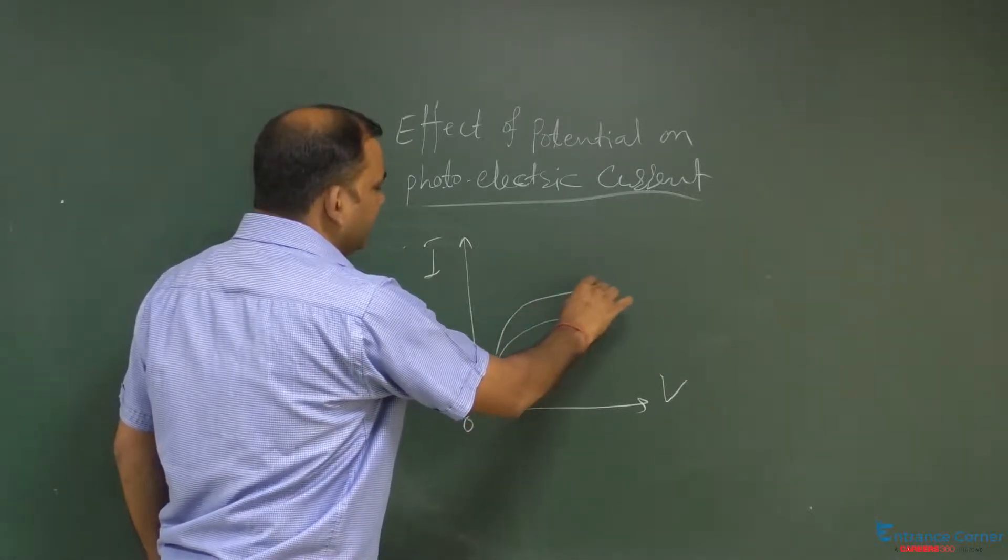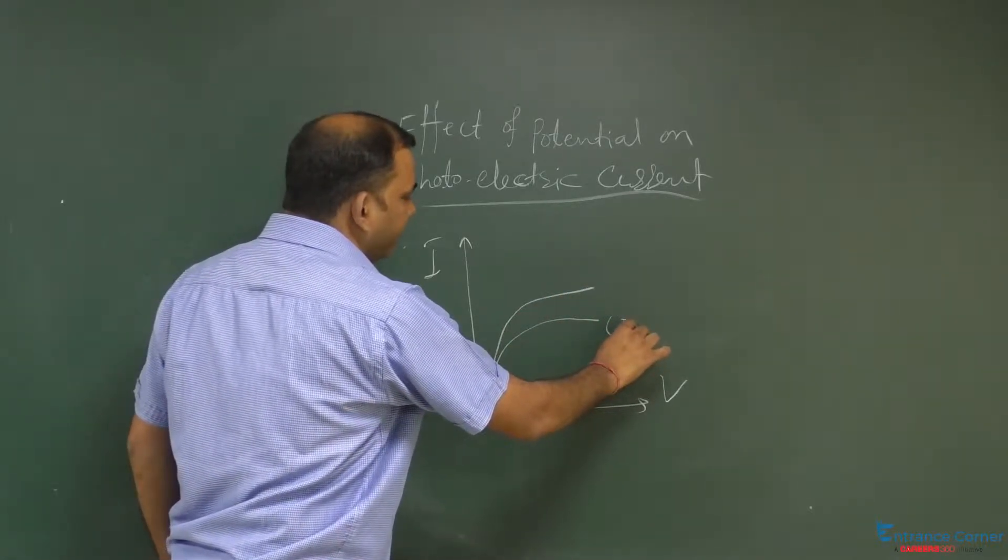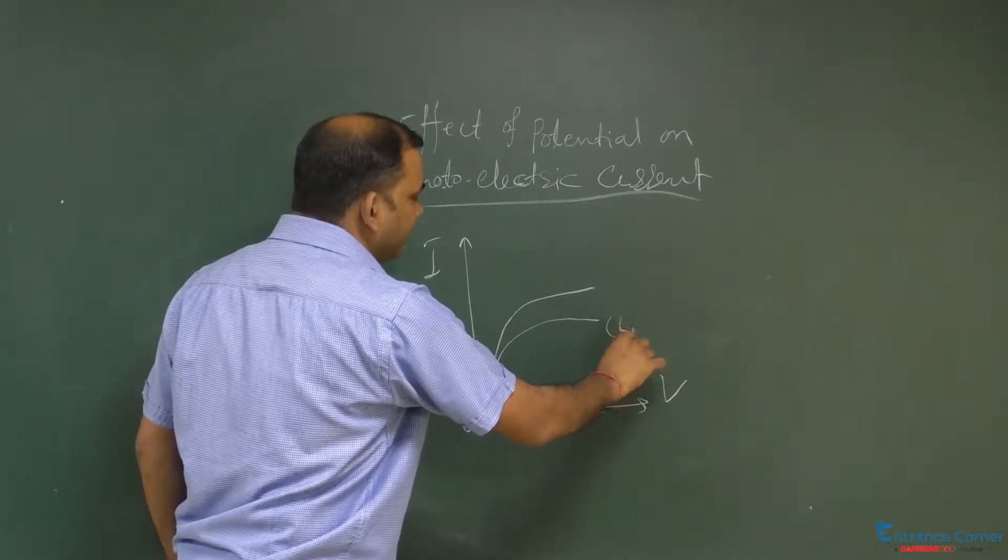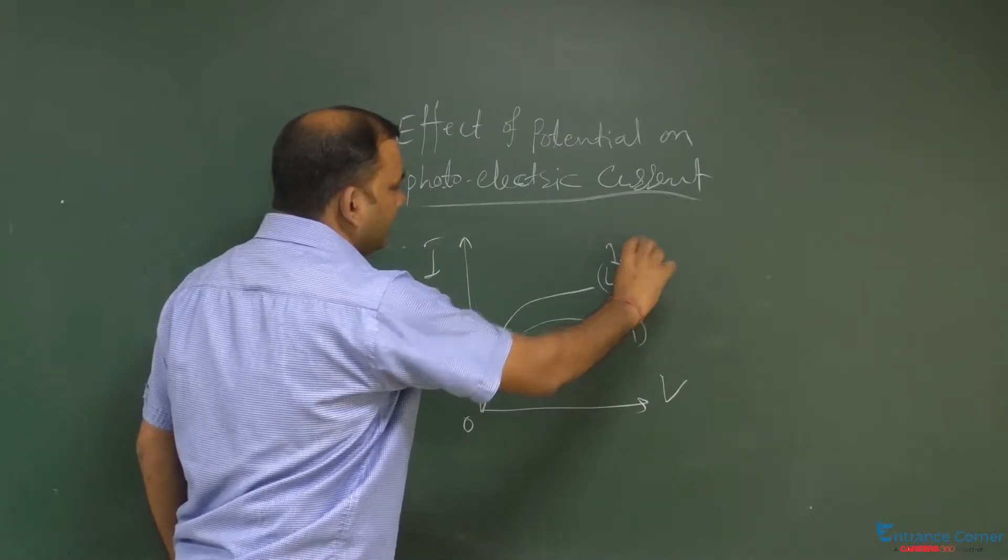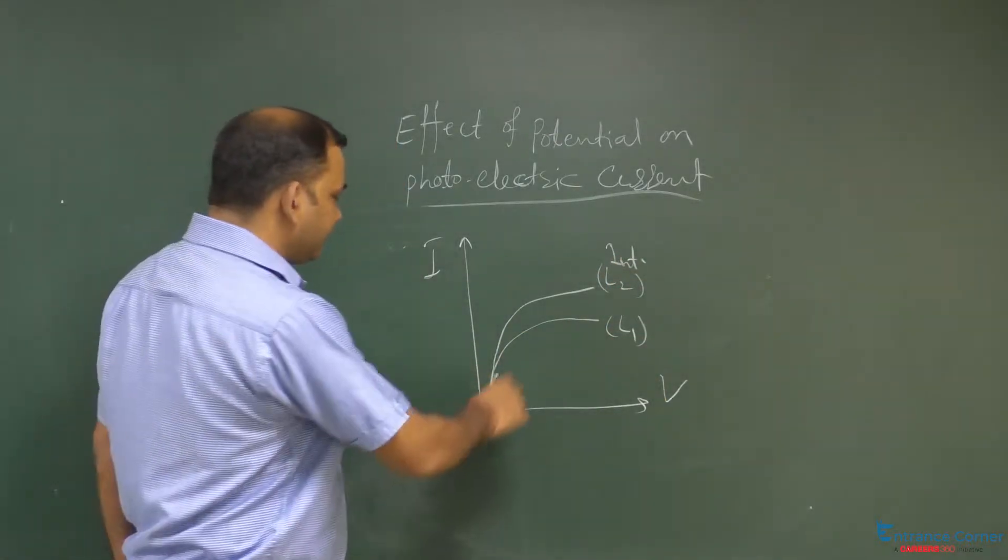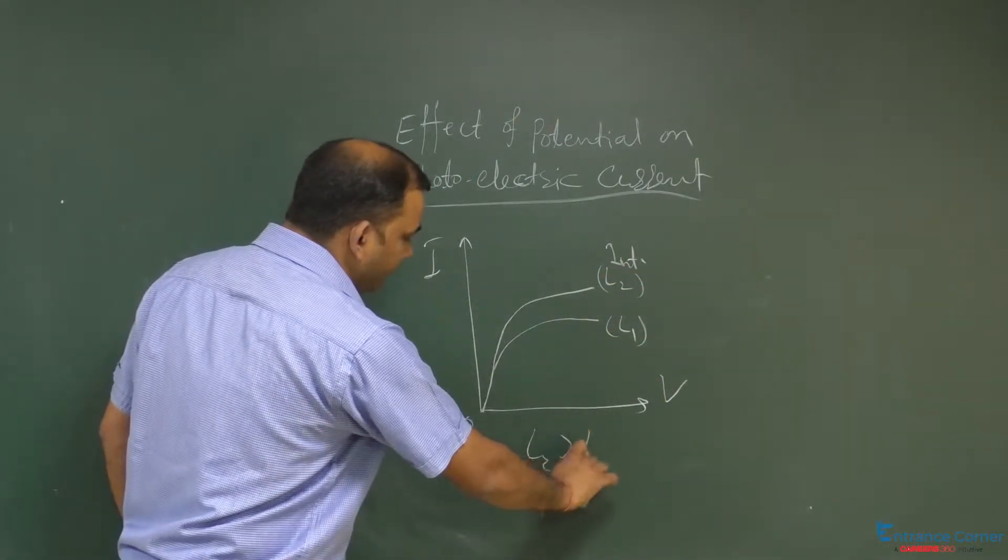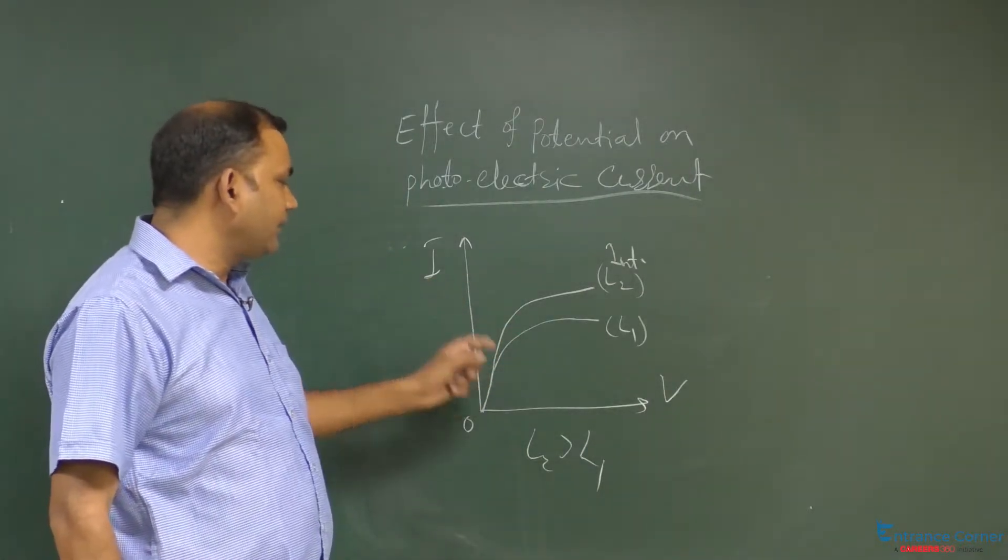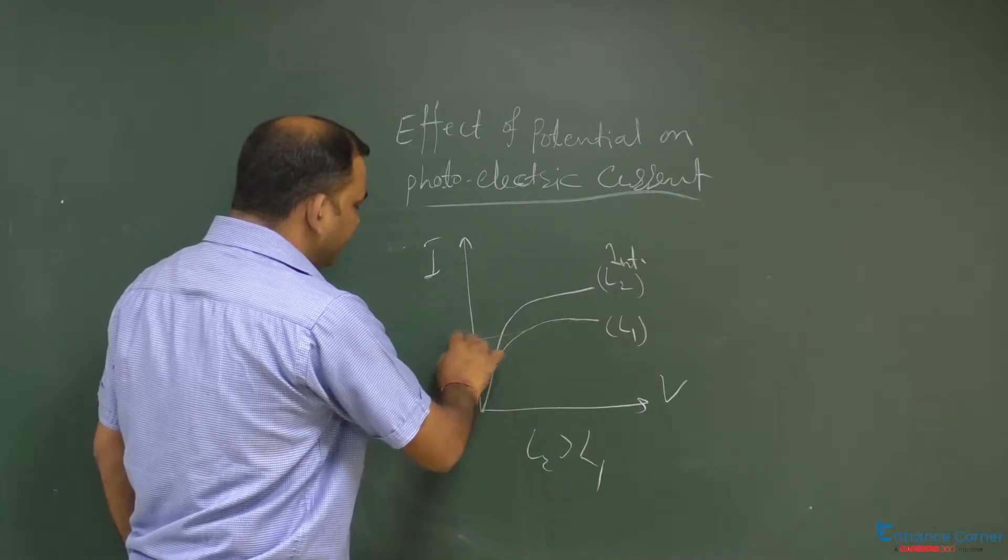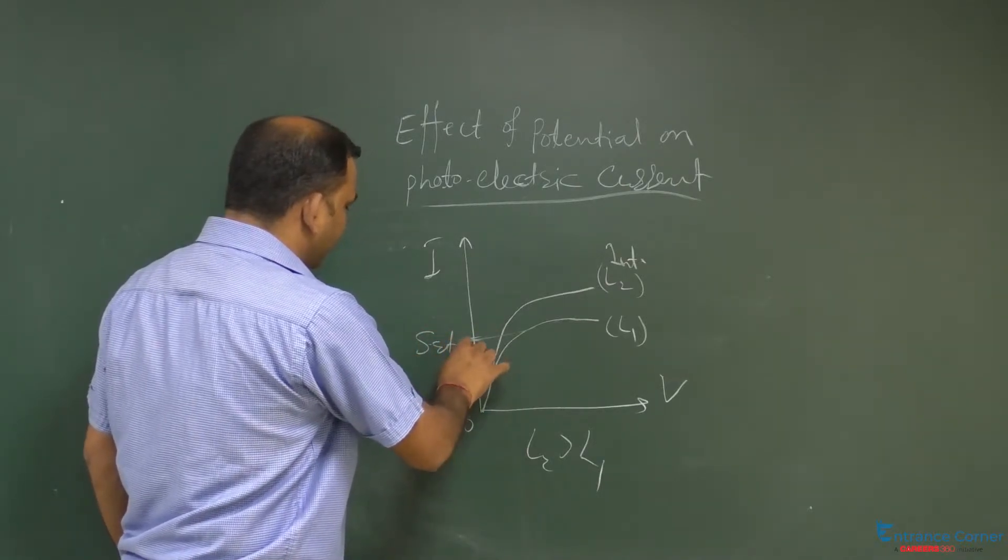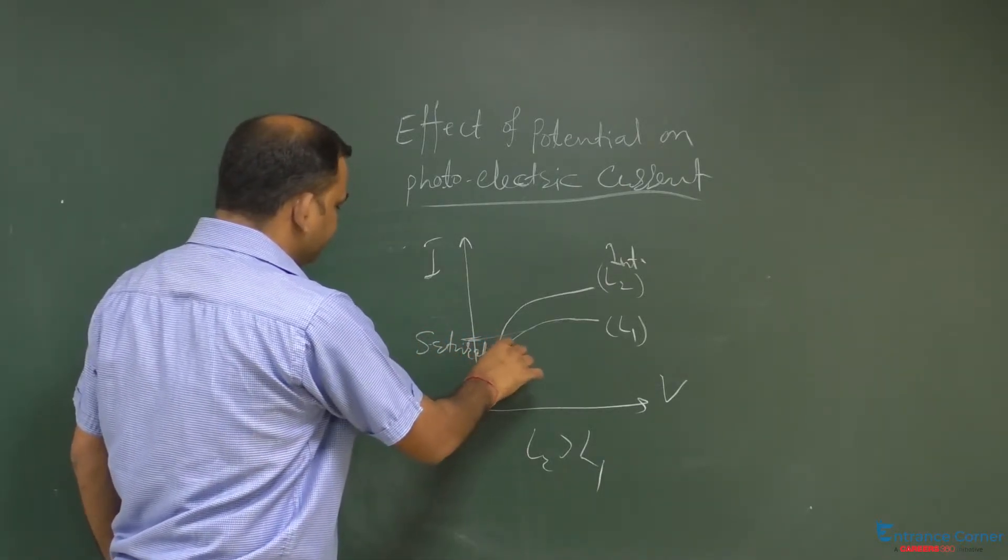Again, if intensity is L1, L2, intensities are different. So this is the graph. L2 greater than L1, intensity ज्यादा होगी, current ज्यादा होगी.